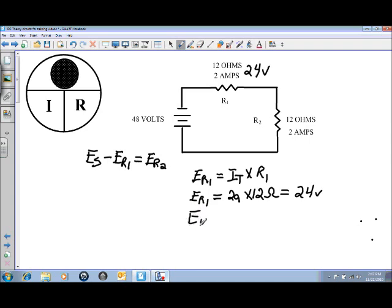So the voltage drop at R2 in this case is going to be your I total times the value of R2. You have a couple of different ways you can calculate it, or E at R2 is equal to 2 amps times 12 ohms and that will get you 24 volts there also.